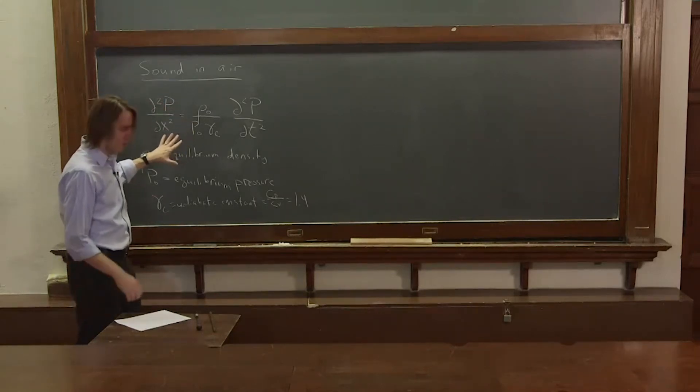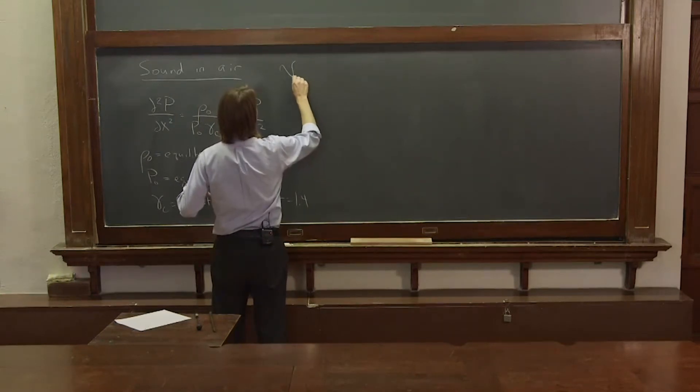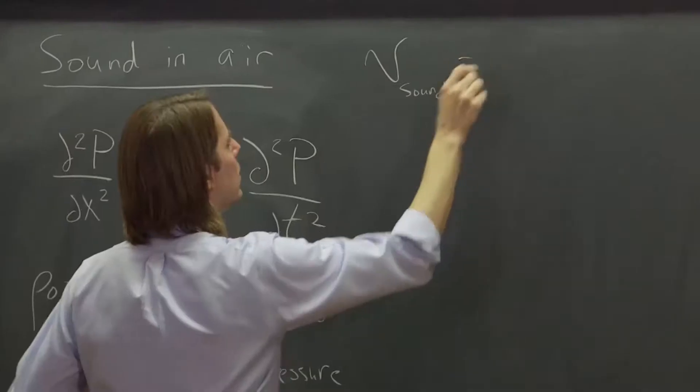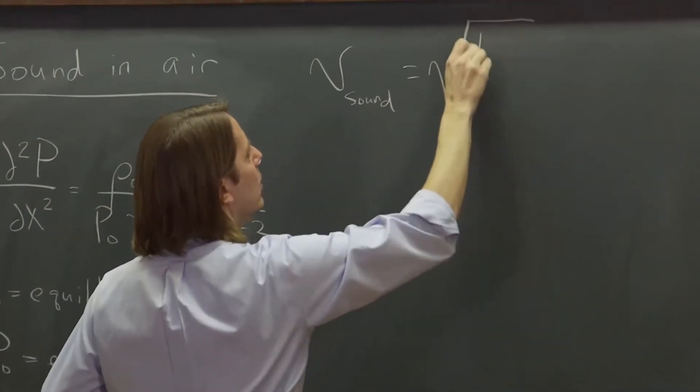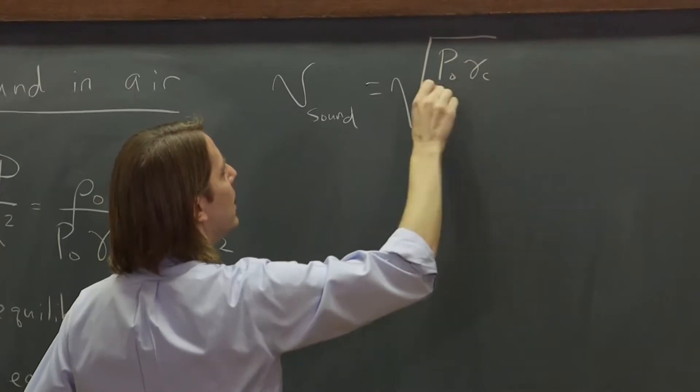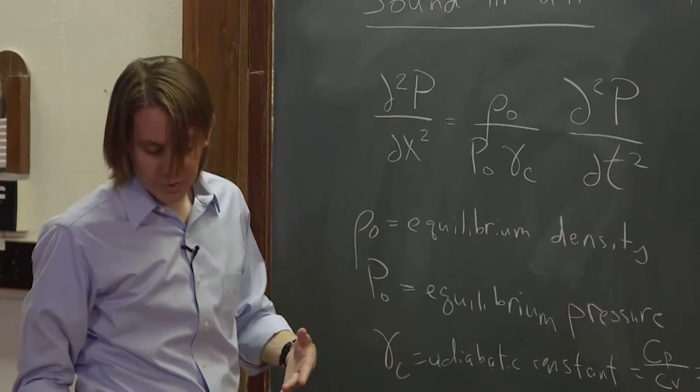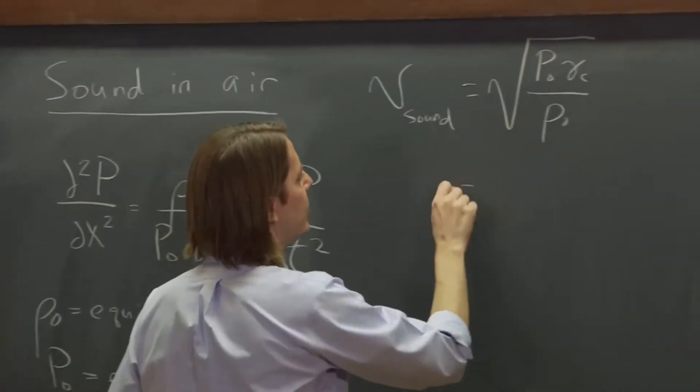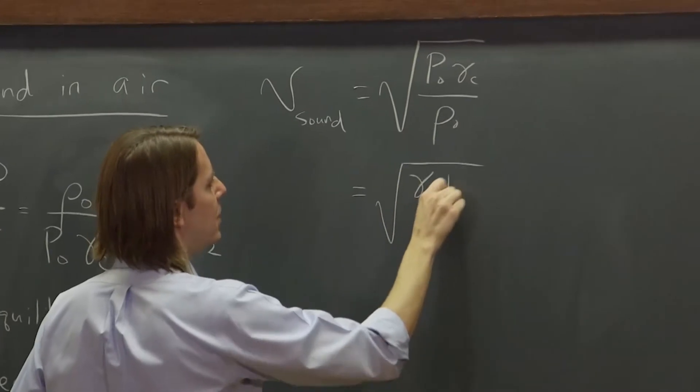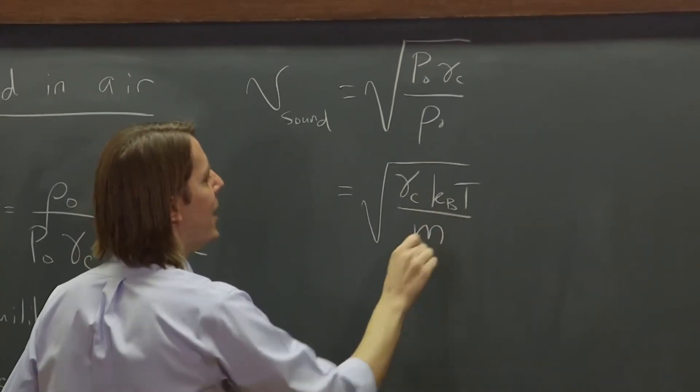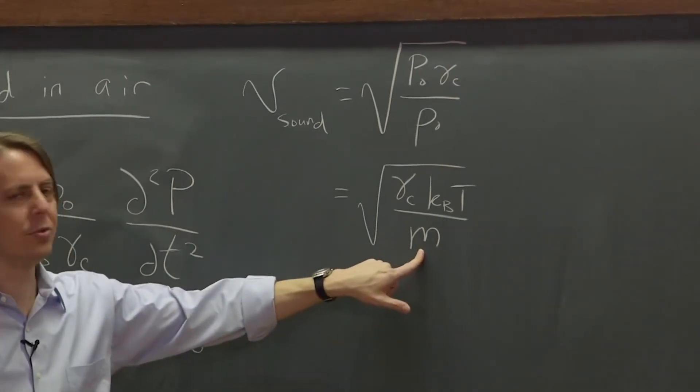So if you look at that wave equation, you know that the velocity of the sound would be the square root of p₀γc over ρ₀. Or if you use the ideal gas law, you could write it as the square root of γc Boltzmann's constant times the temperature over the mass of the molecule. So this literally would be the mass of the molecule in kilograms.